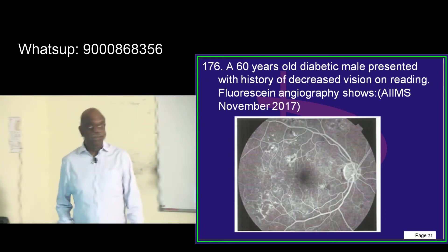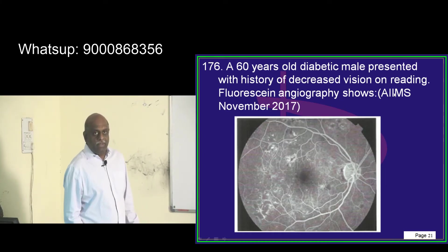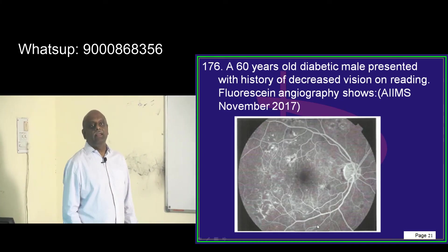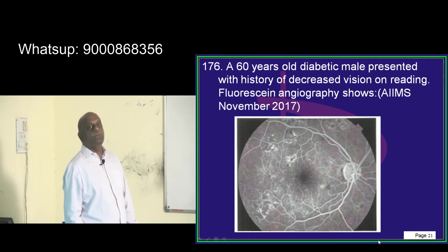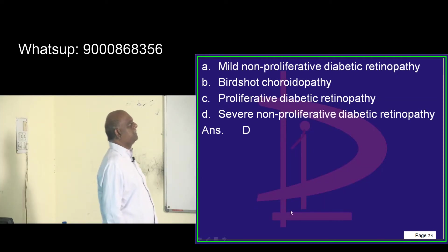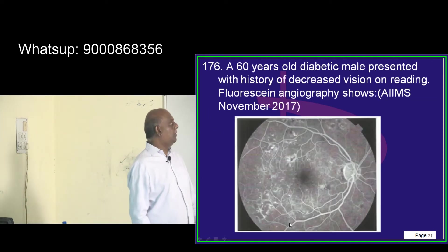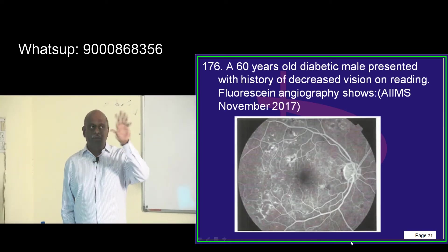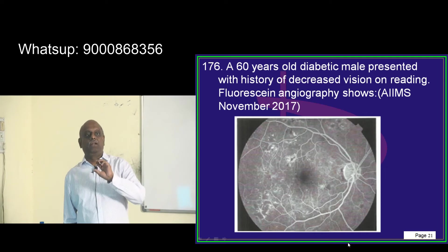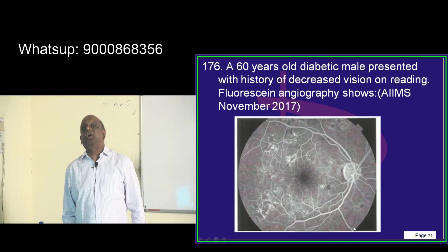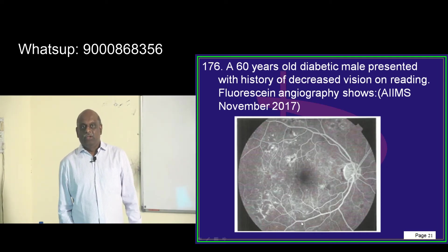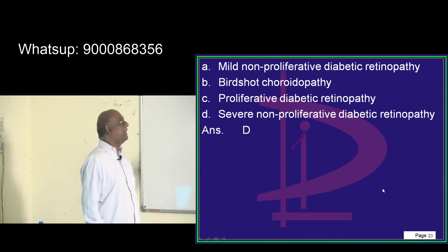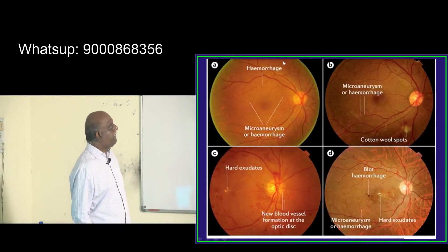A 60-year-old diabetic male with decreased vision on reading is shown a fluorescent angiography. There are no large hemorrhages and neovascularization is not yet seen. That is why it is still non-proliferative diabetic retinopathy, which is what you need to remember.